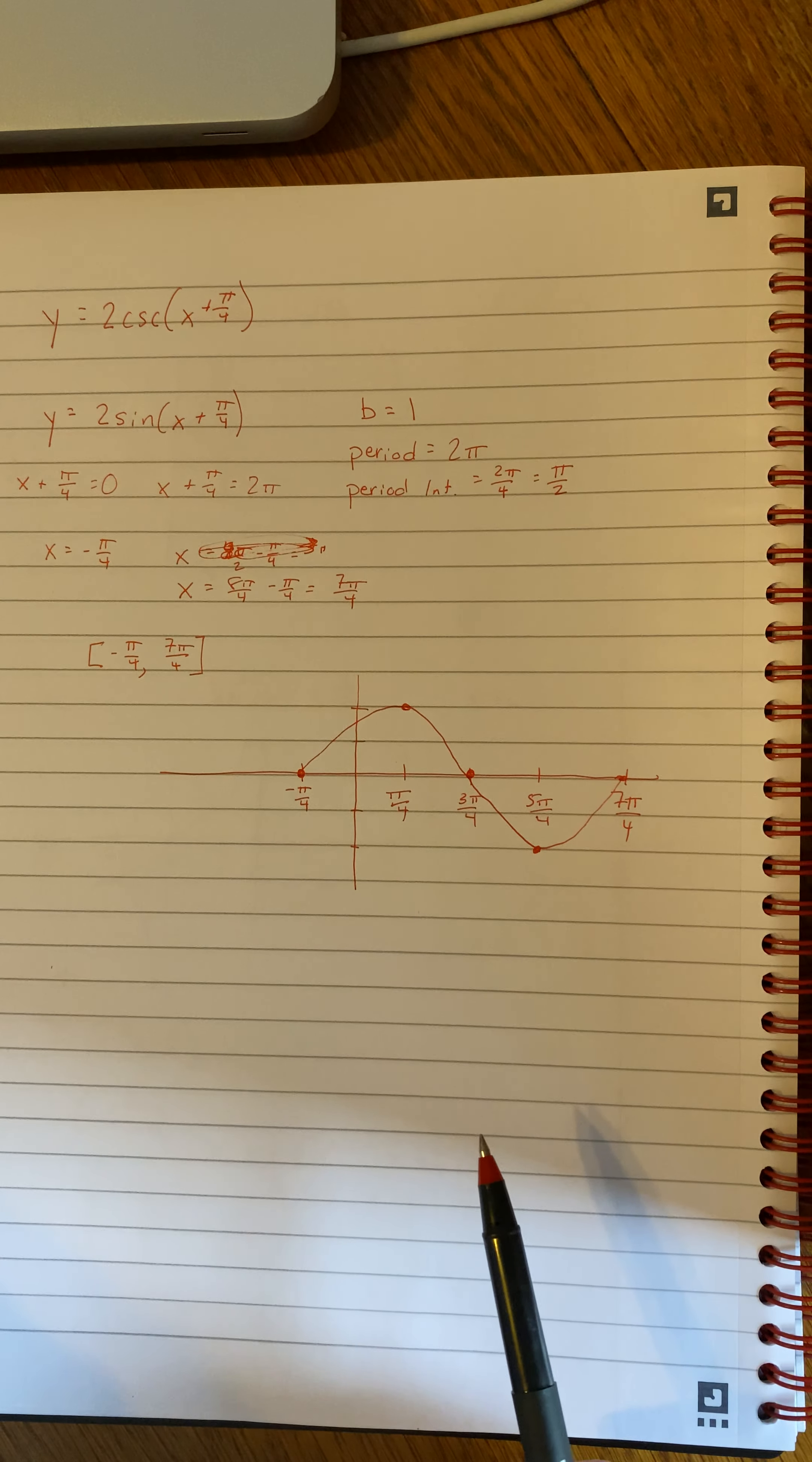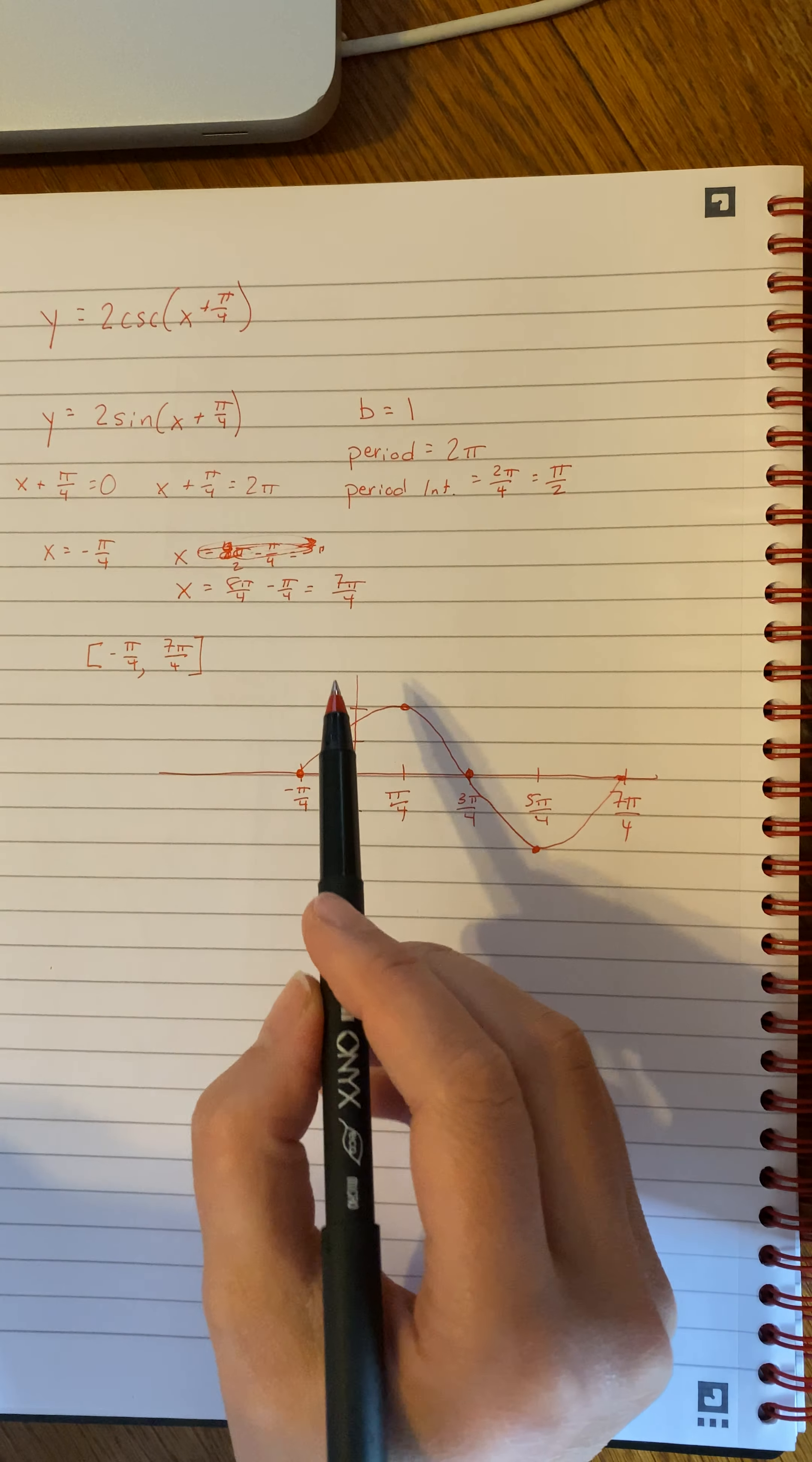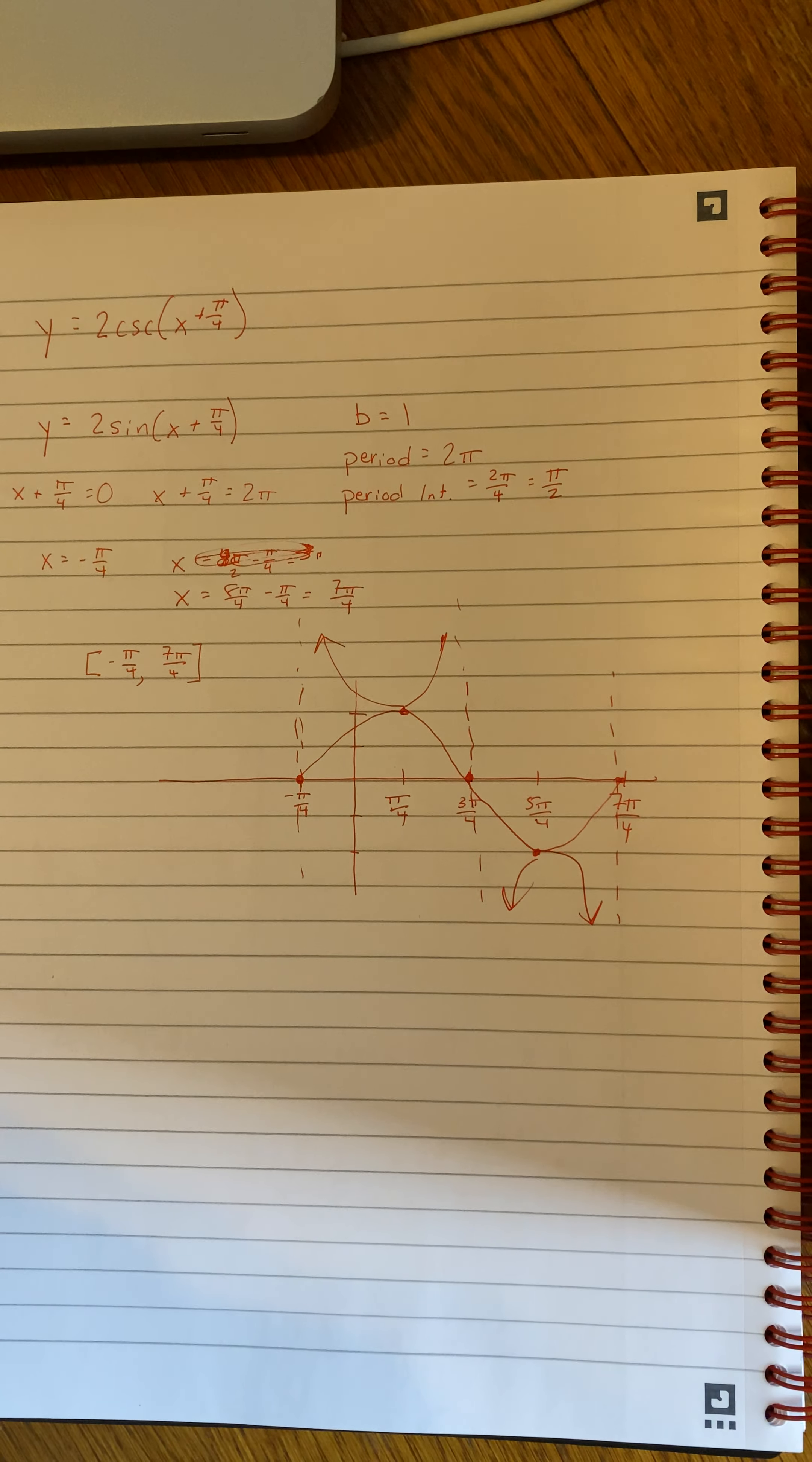So now I'm thinking, where are my asymptotes? So I need to think, what values is sine 0? Because it's going to be 1 over the sine of x plus pi over 4. So my asymptotes would be at negative pi over 4, 3 pi over 4, and 7 pi over 4. So my cosecant graph is going to go up like this, because my asymptotes will go all the way up, and then it'll go down on this side. And there you go.